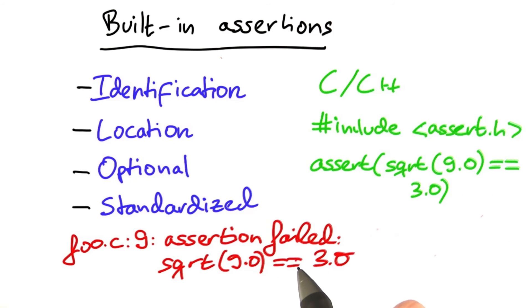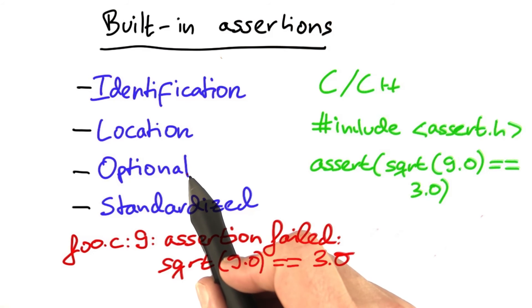You can see that the message has everything we wanted in our built-in assertions. First, the failing assertion is identified as coming directly from the code. You see the location. Here it's in the file foo.c in line 9.